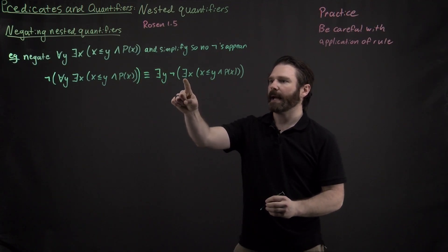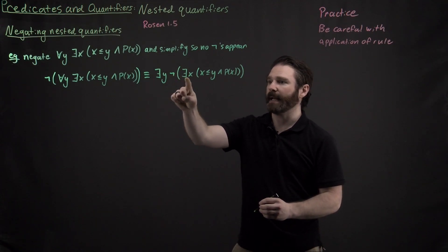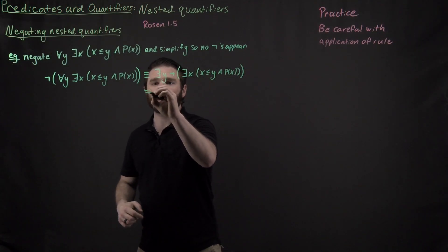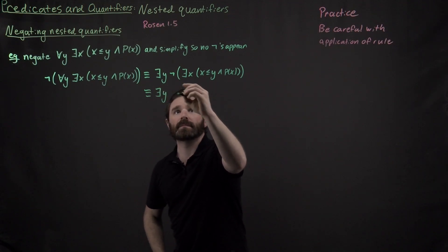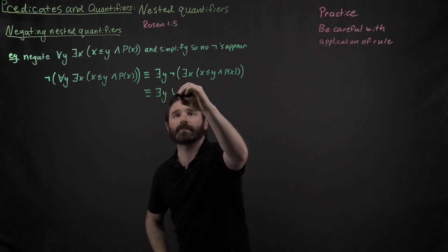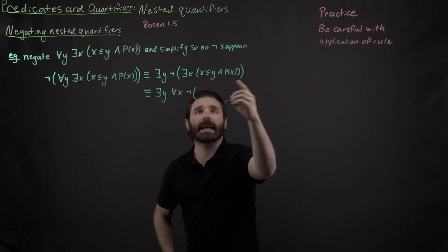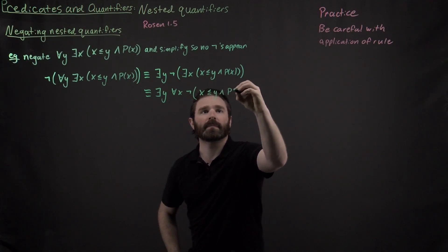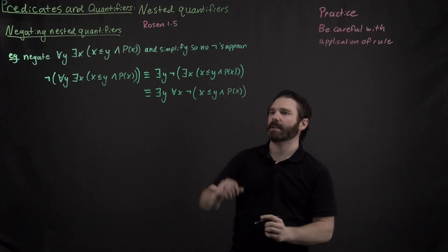And again, I have to apply DeMorgan's law right here again because I'm negating one of my quantifiers. So applying DeMorgan's law, I have that this thing is logically equivalent to, I flip my quantifier, and then I negate everything inside of here. So I've successfully applied DeMorgan's law.